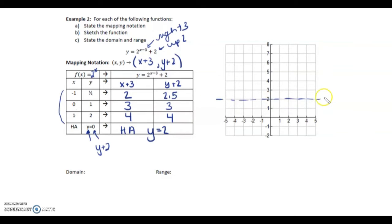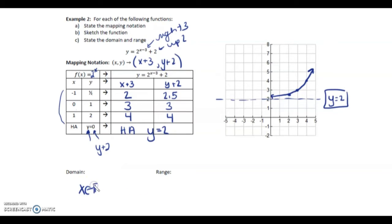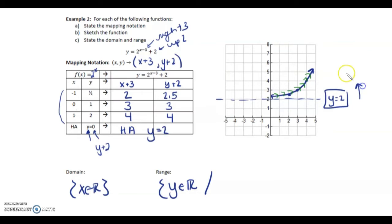If we were to graph this, we can graph the asymptote y equals 2, and now let's plot a couple of points: (2, 2.5), (3, 3), (4, 4). The domain is x ∈ ℝ, always, unless it's a word problem. For the range, we're going from left to right — the graph is increasing and we're above the asymptote. So y is strictly greater than 2, because 2 is our horizontal asymptote.